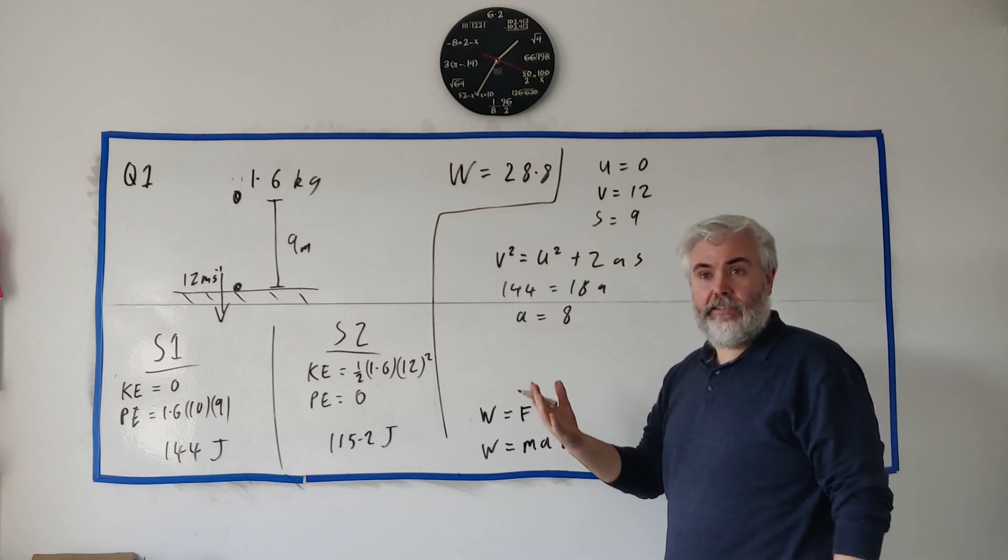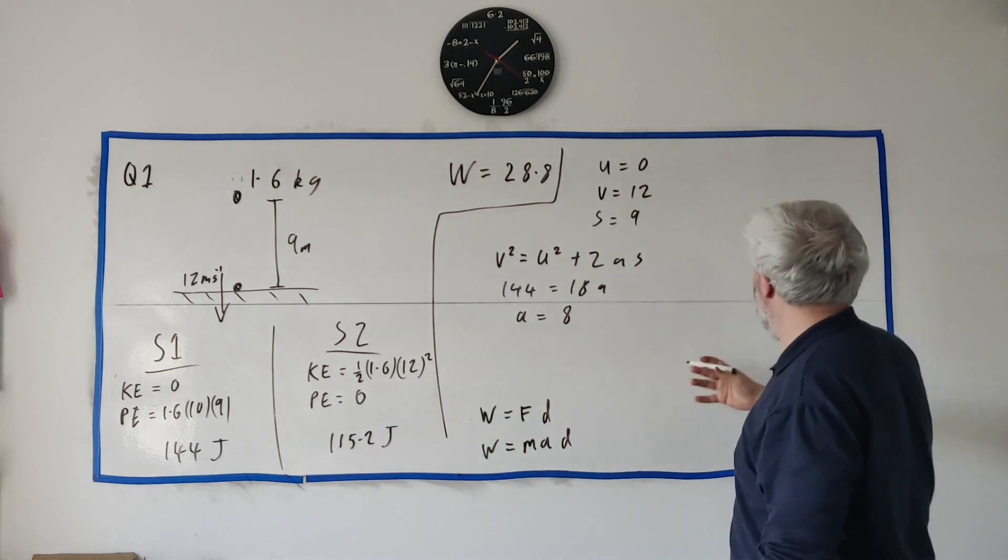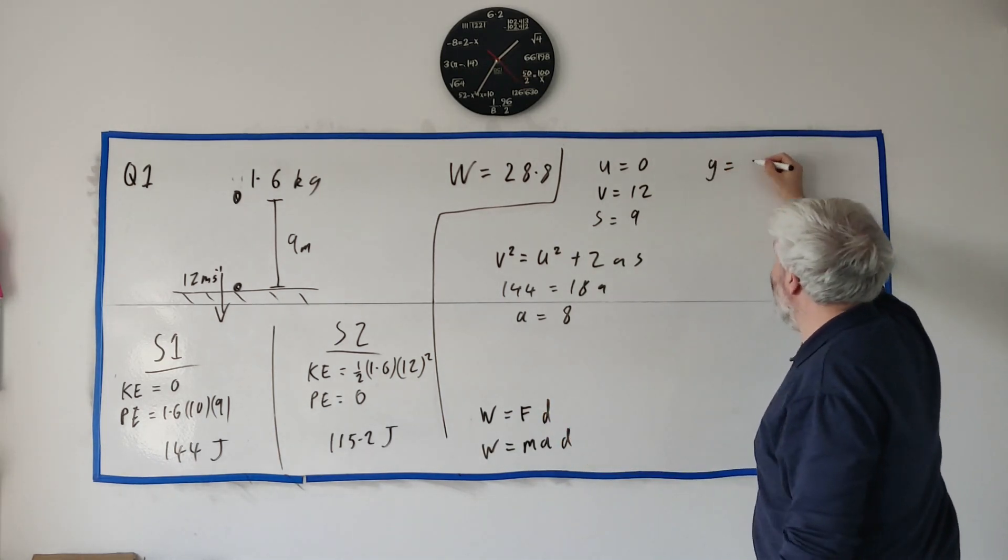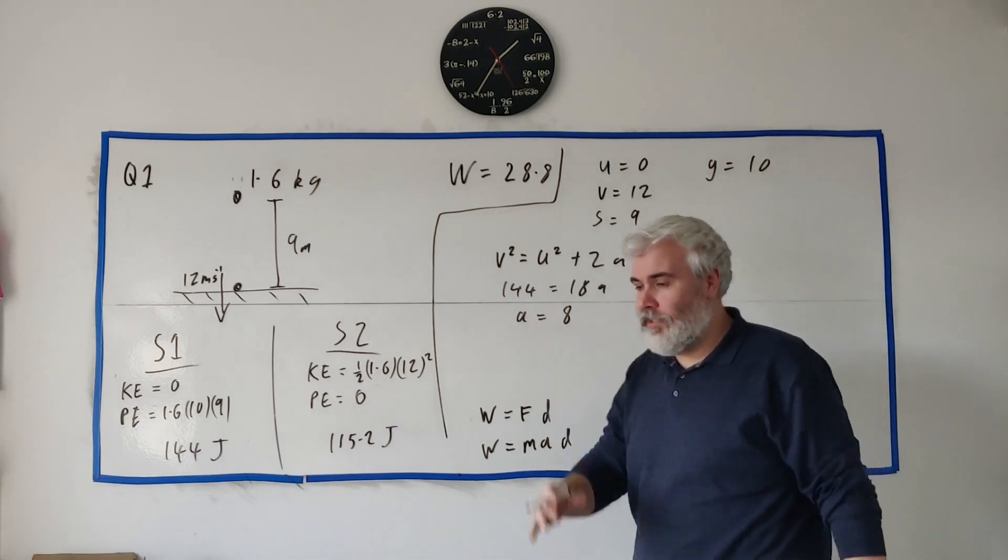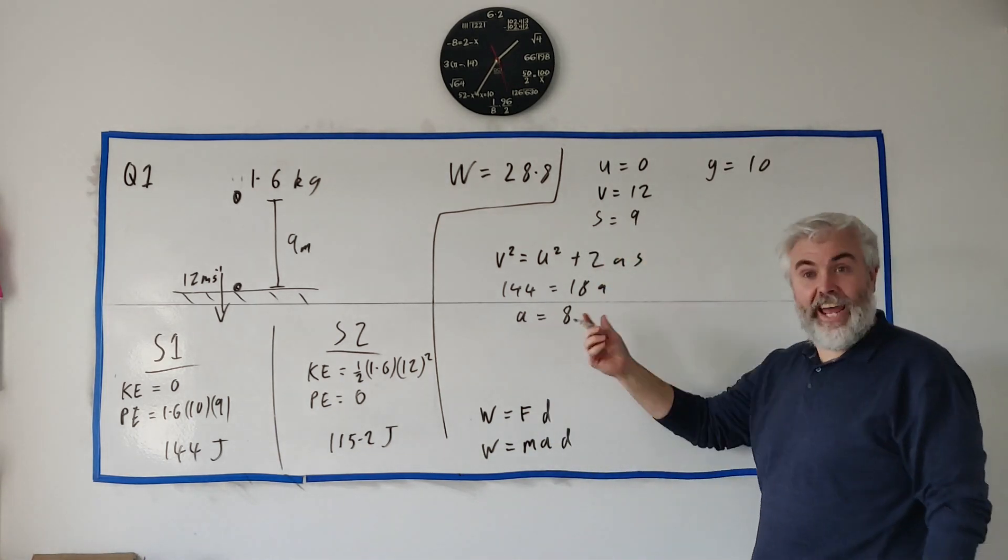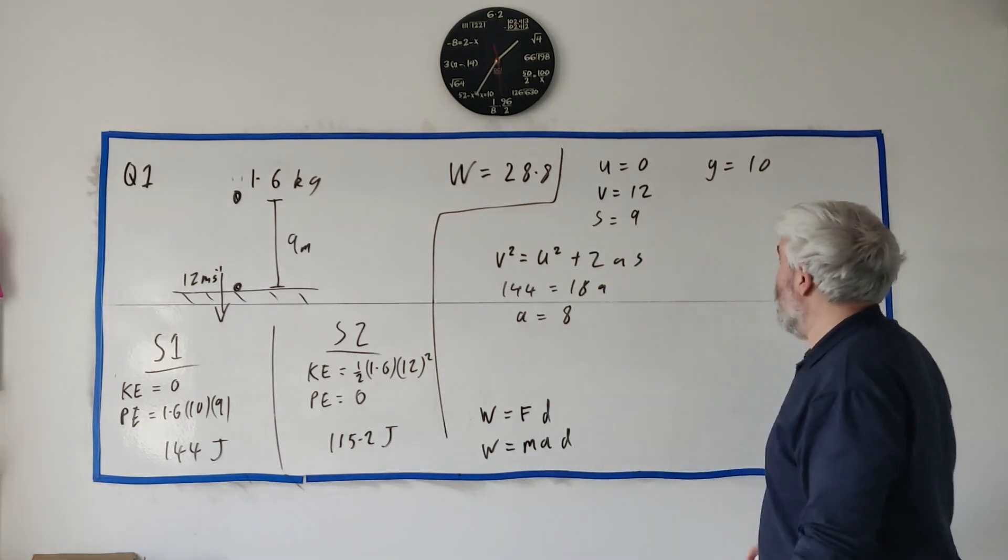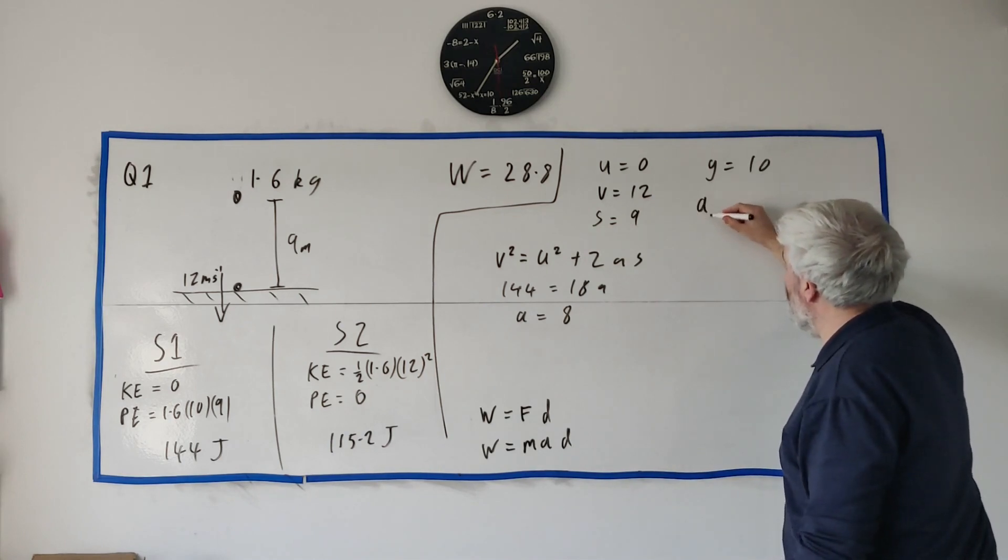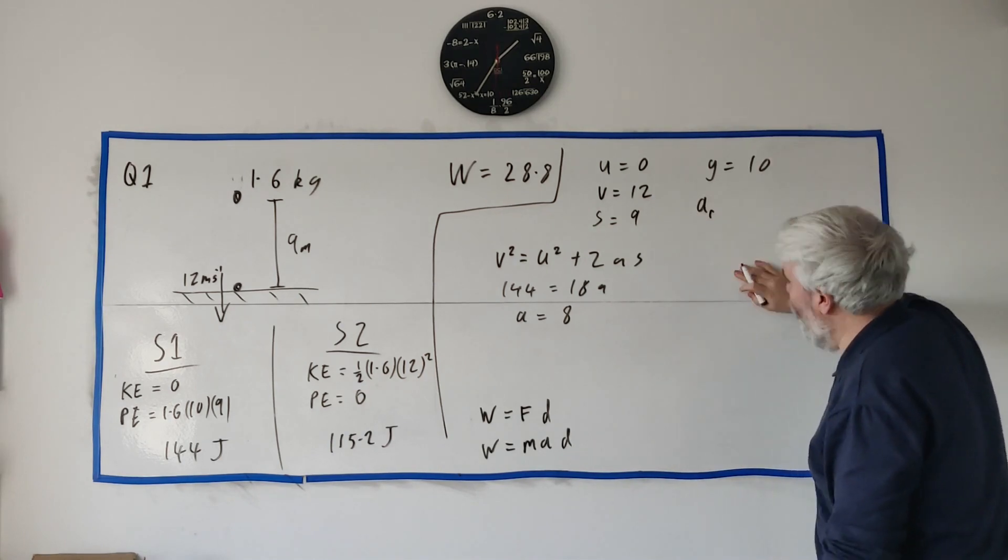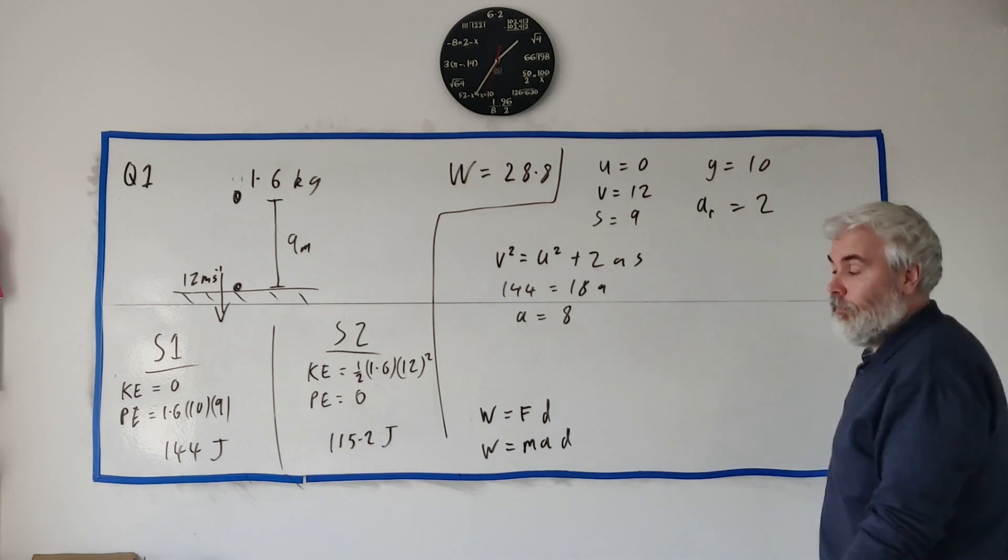The trick here is to know that this isn't gravity. Gravity should be 10, g equals 10 at least in these questions. So something's acting against gravity here so the acceleration due to resistance must equal 2.